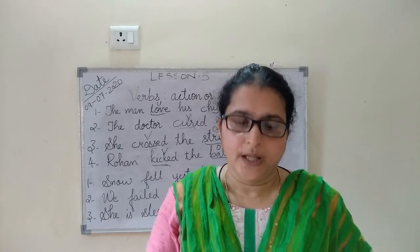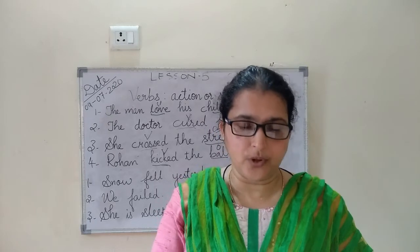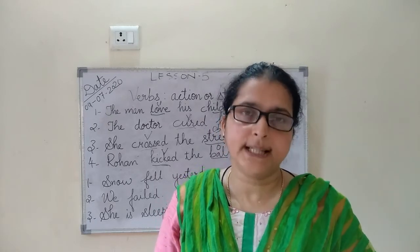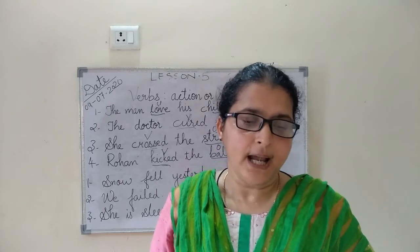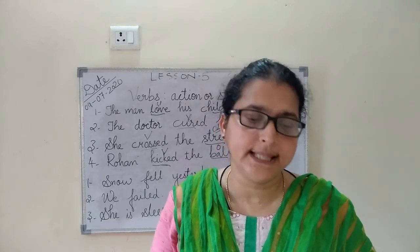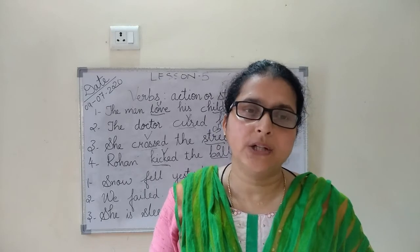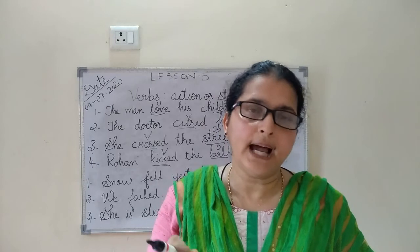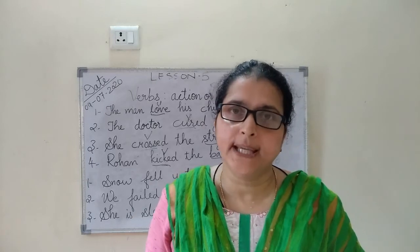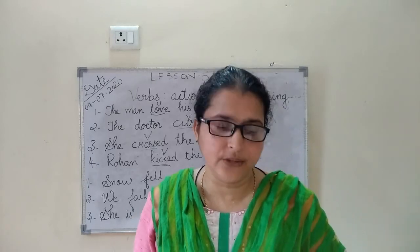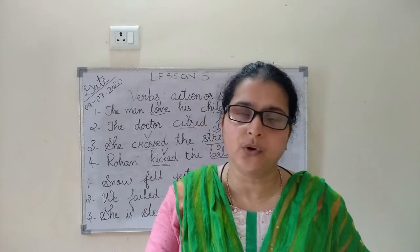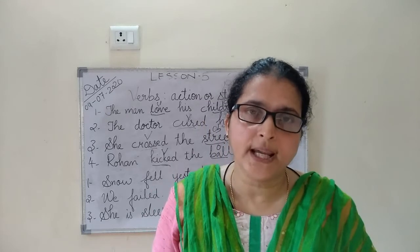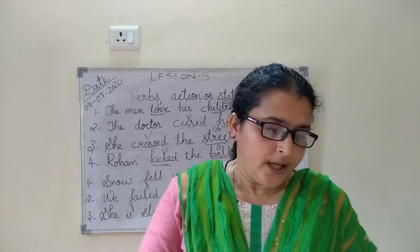What is a transitive verb? On page number 43 of your book: a verb which has an object is called a transitive verb. So if it is a transitive verb, there is always an object in the sentence.